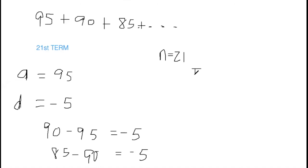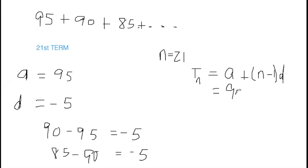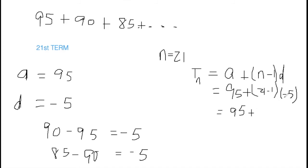The question asks for the 21st term. Using the term formula A plus (N minus 1) times D, with A equal to 95 and D equal to negative 5. Substituting N equals 21: we have 95 plus (21 minus 1) times negative 5. That gives us 95 plus 20 times negative 5, which is 95 minus 100, giving us negative 5.